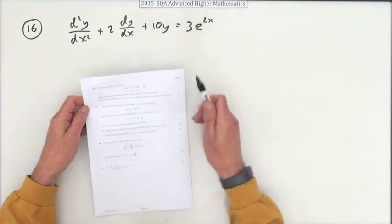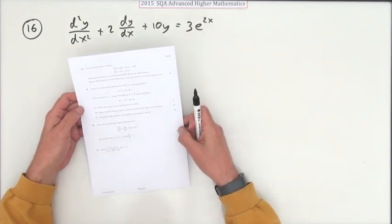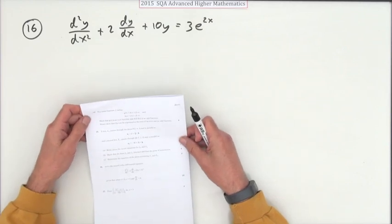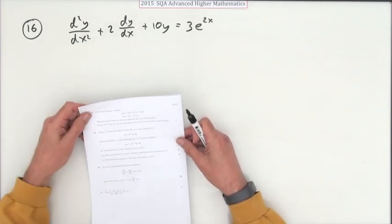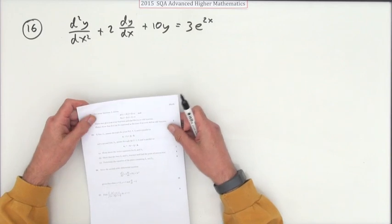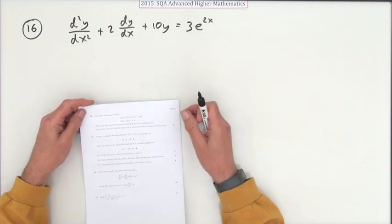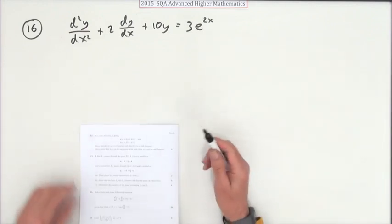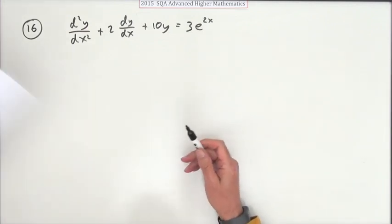Number 16, from the 2015 Advanced Higher Maths. A second order differential equation. Well, it all just depends what pops out of this, if it's anything that clashes with that, or if it's sines and cosines, because they can be a real pest when it comes to the evaluation because you get so many numbers.